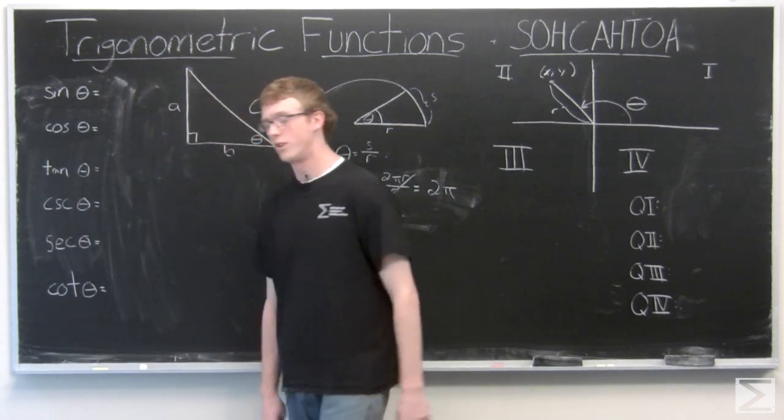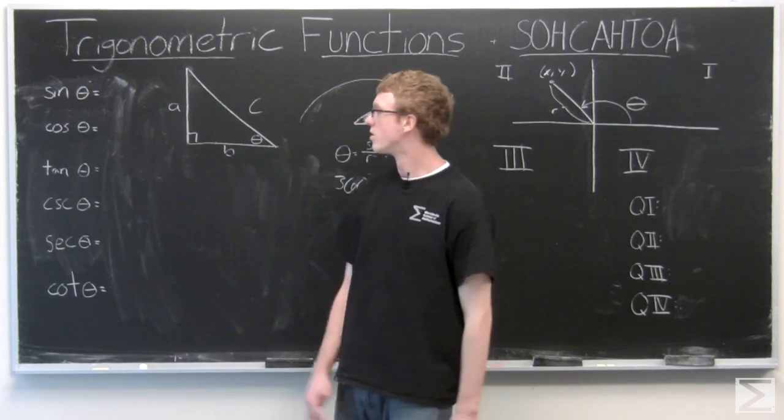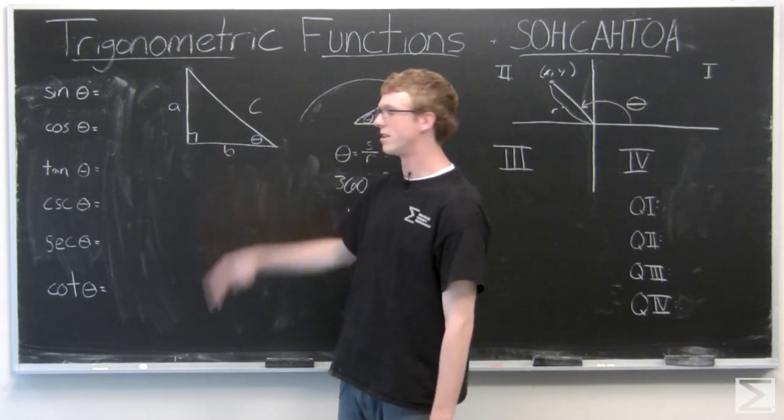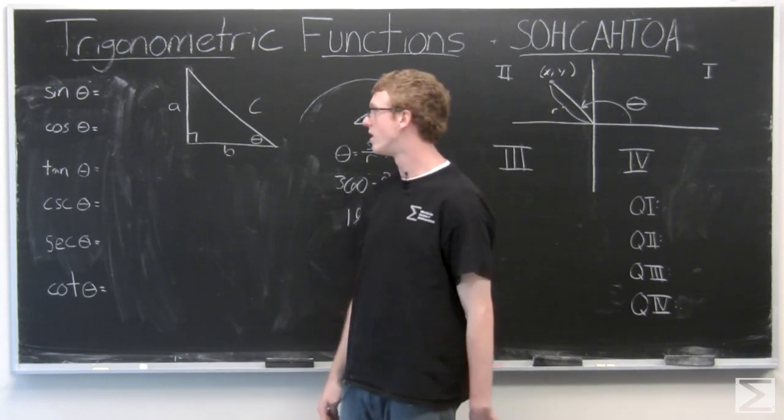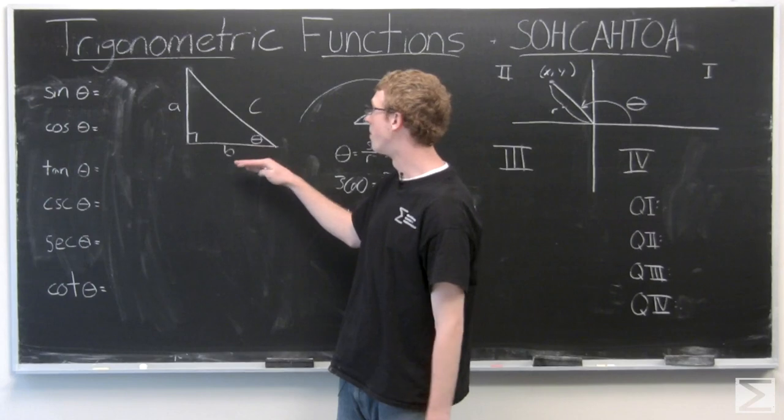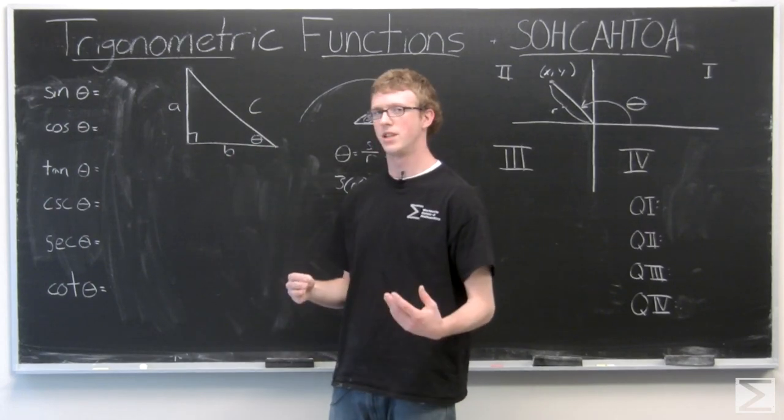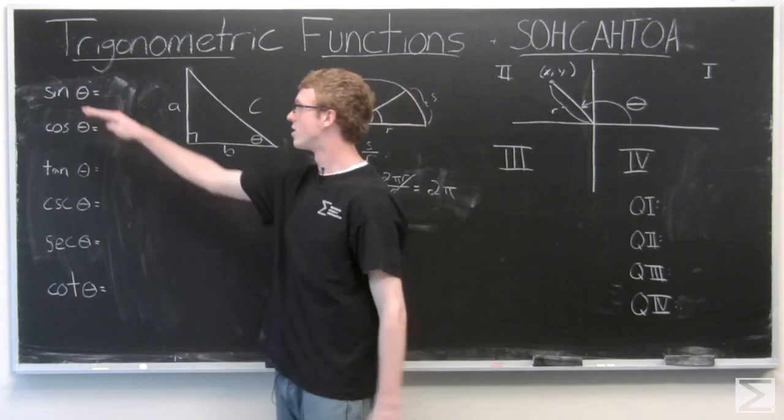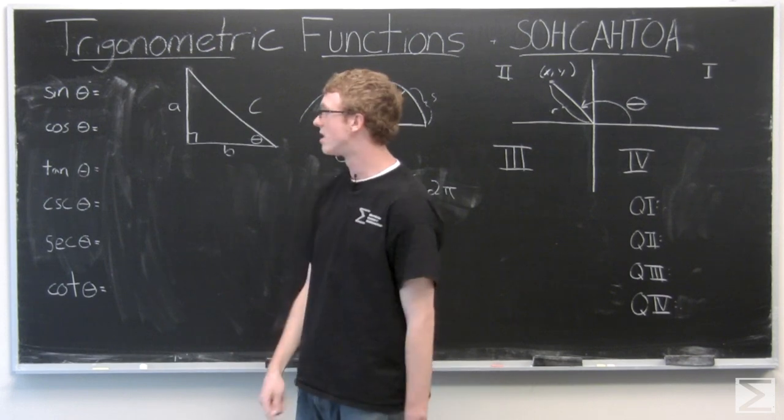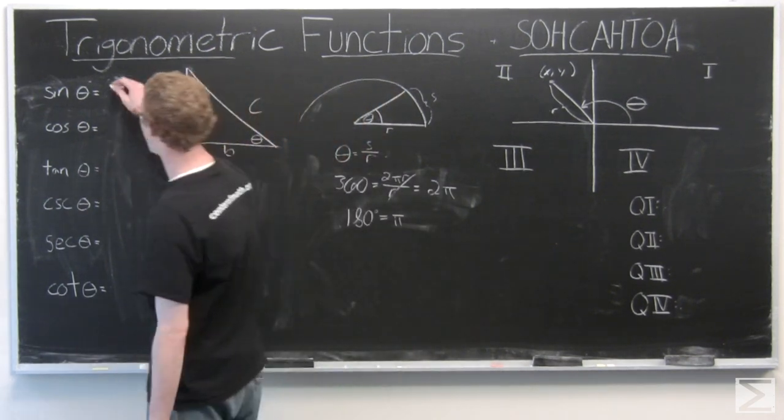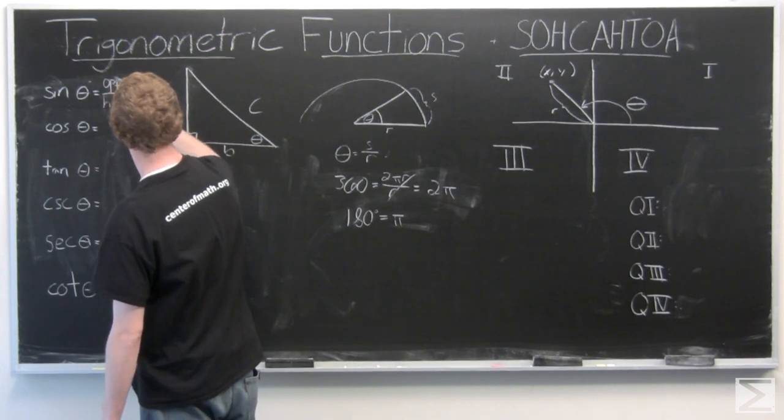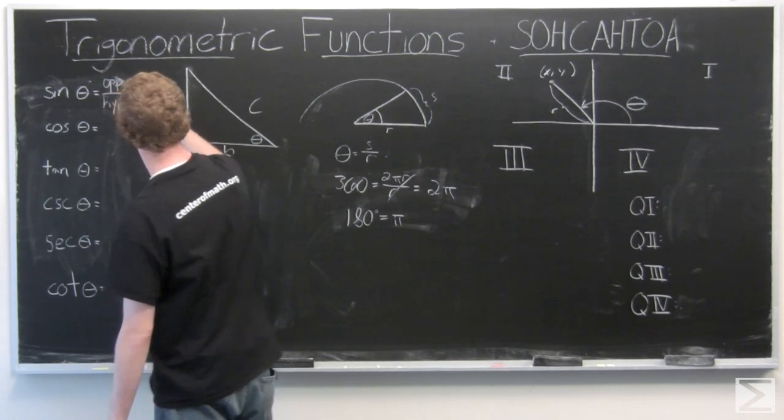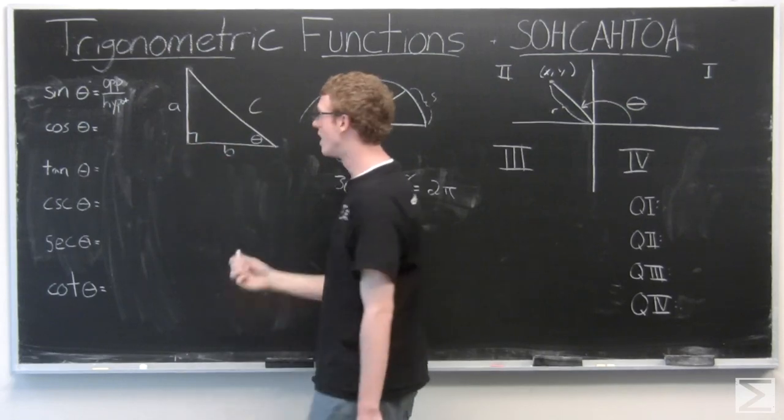Now we're going to go over the trig functions in relation to a right triangle. So the trig functions relate the sides of a right triangle to an angle theta, and this is where SOHCAHTOA is going to come in. SOHCAHTOA, they're all abbreviations. So the first trig function we have is sine. That's the S in SOHCAHTOA, and OH is opposite over hypotenuse. And this triangle, that's A over C.